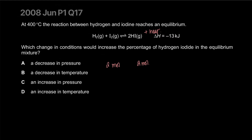A decrease in temperature: decreasing the temperature will favor the side producing heat, so more heat will be produced. If you increase the temperature, it's producing heat already and you're adding heat to the system, so it's going to go that way. Decreasing the temperature will take away heat from the system — so more of the reaction will go towards the right-hand side.